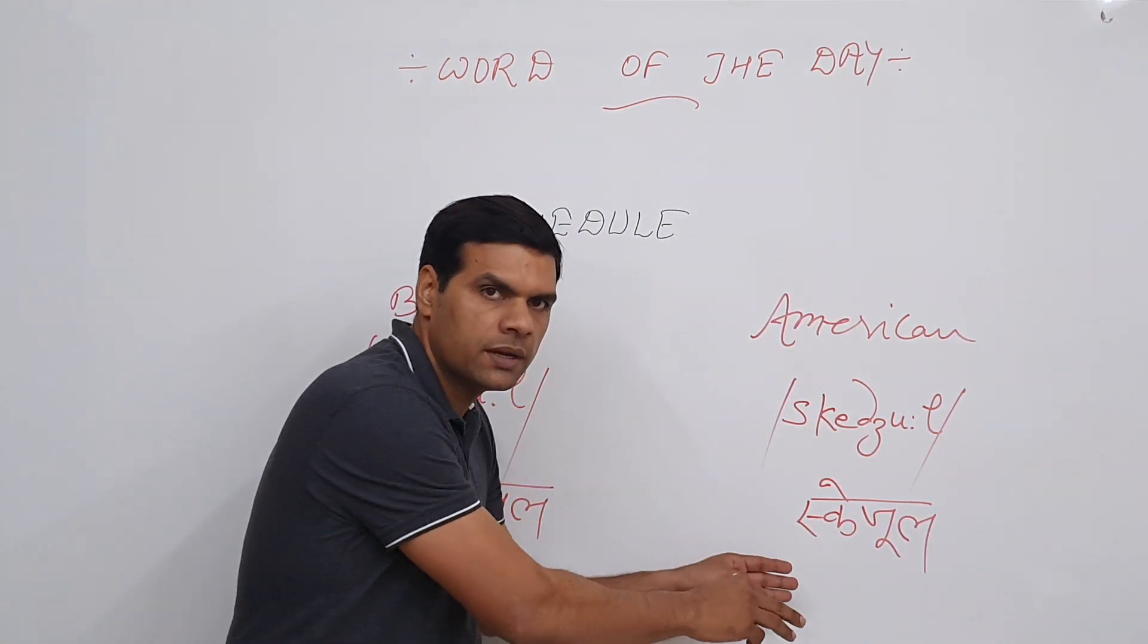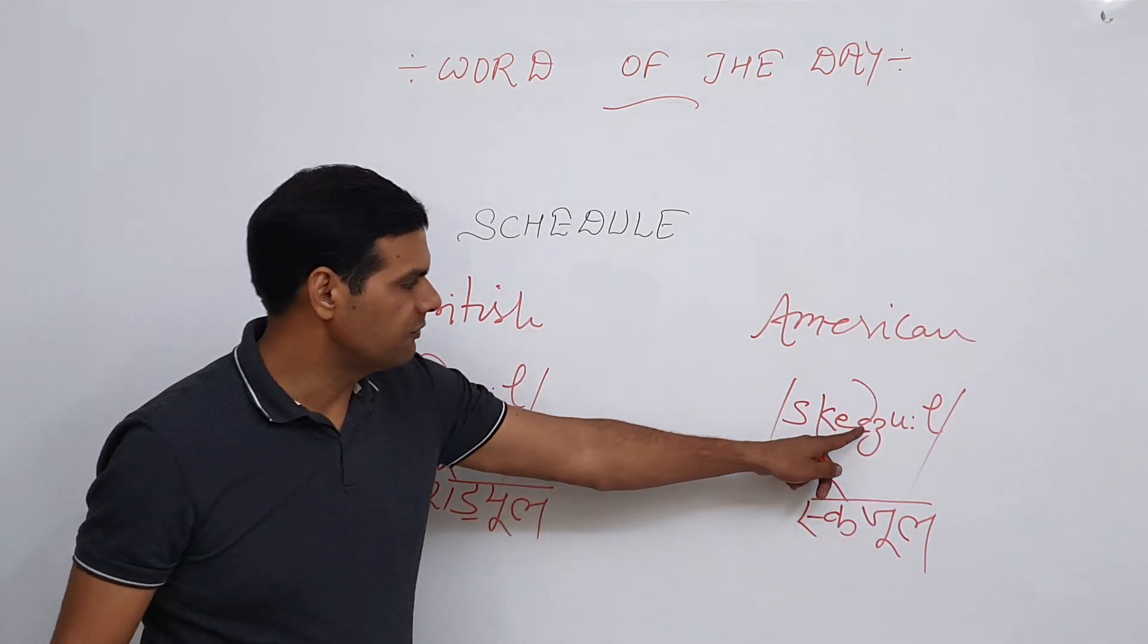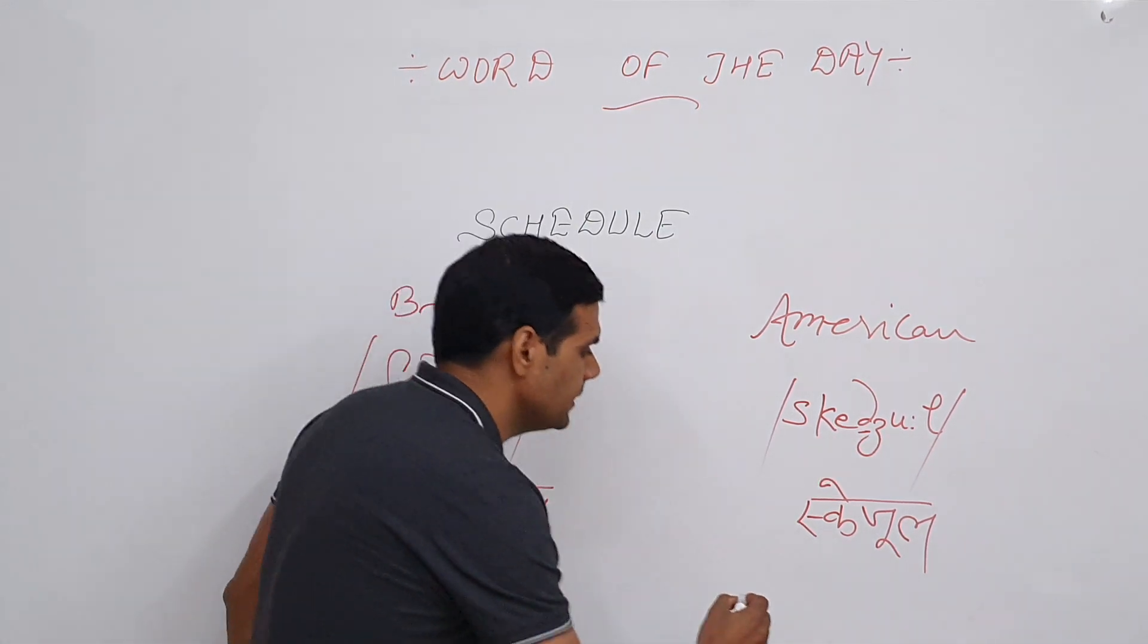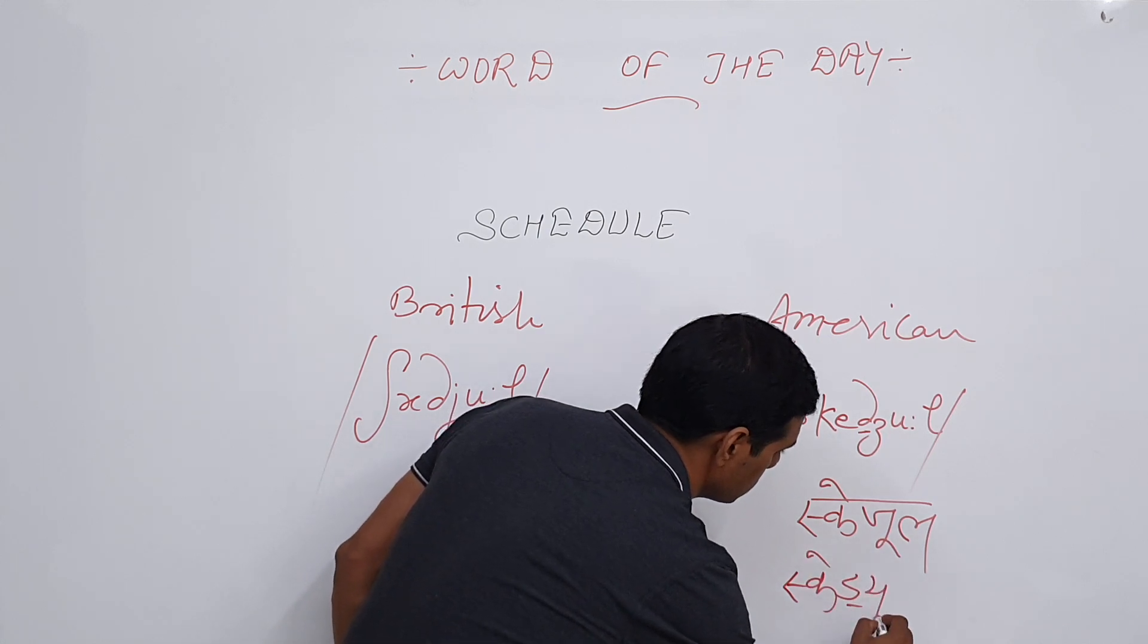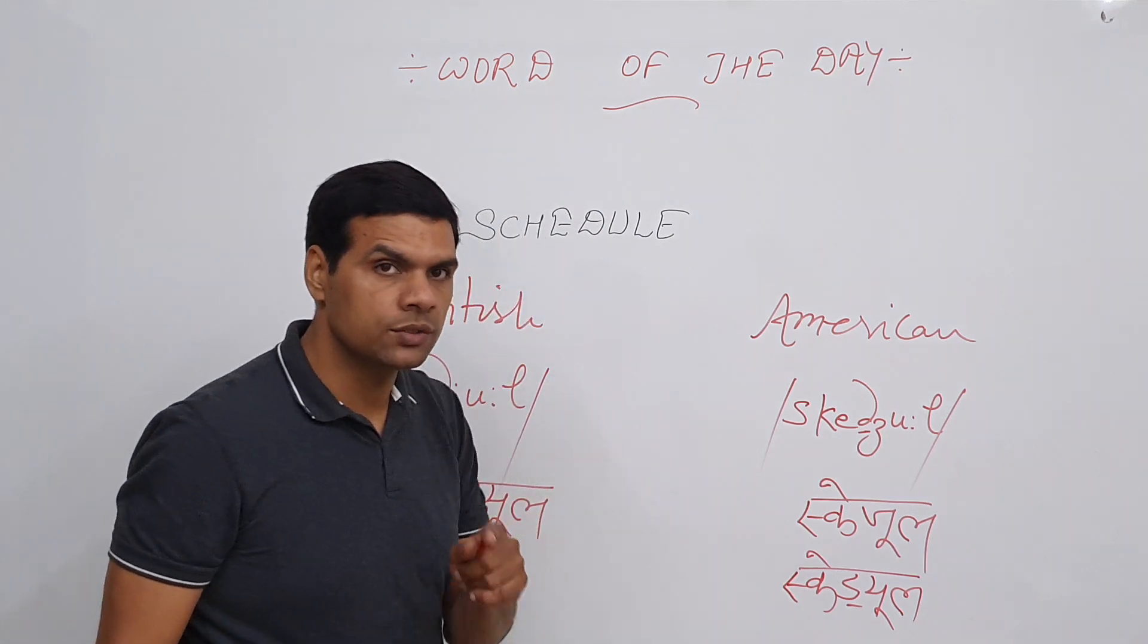Here comes the problem. Many people think that because of this D phoneme here, the pronunciation actually is 'schedule.' They tend to pronounce it as 'schedule,' which actually is wrong.